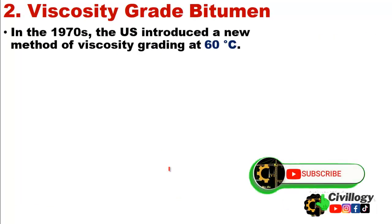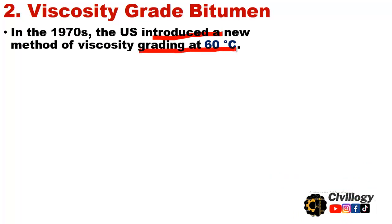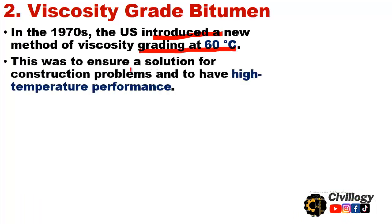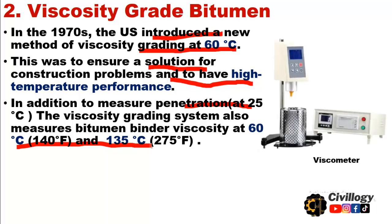The second gradation system is viscosity grade bitumen. In the 1970s, the United States introduced a new method of viscosity grading at 60 degrees centigrade to ensure a solution for construction problems and to achieve high temperature performance. In addition to measuring penetration at 25 degrees centigrade, the viscosity grading system also measures bitumen binder viscosity at 60 degrees centigrade and 135 degrees centigrade. This is a typical viscometer used to determine the viscosity of bitumen.